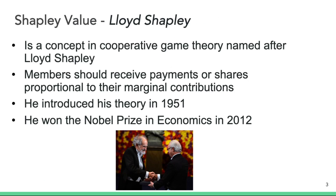The SHAP explanation method is an implementation of Shapley Values, which is a concept in cooperative game theory named after Lloyd Shapley. The idea is that members should receive payments or shares proportional to their marginal contributions. And in order to distribute the gains fairly, we need to establish what value a person adds to the group. Interestingly, Lloyd Shapley introduced his theory in 1951 and went on to win a Nobel Prize in economics in 2012.